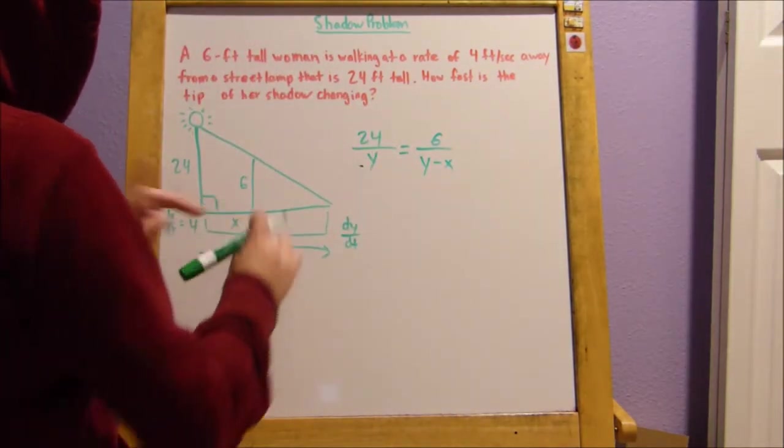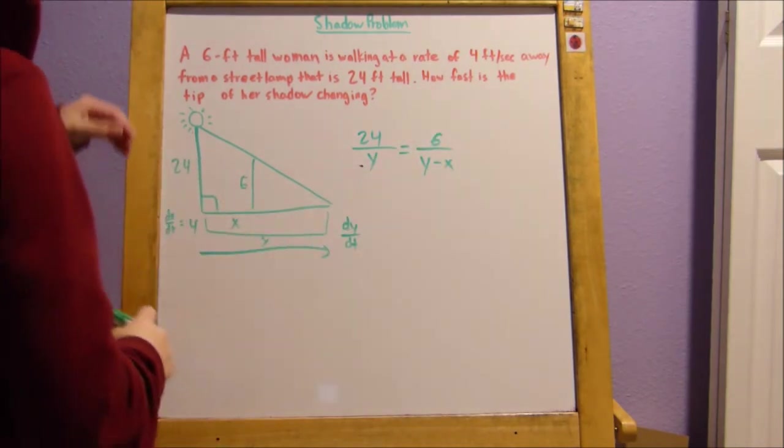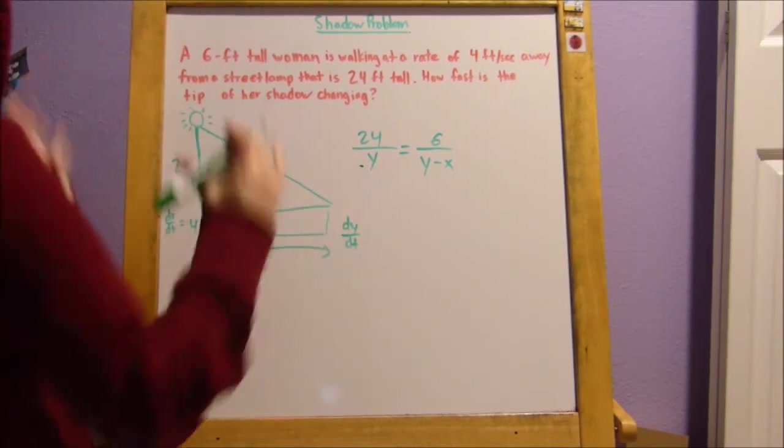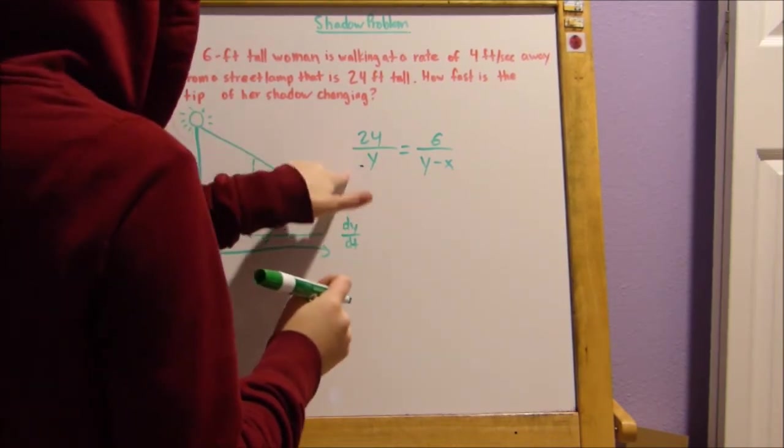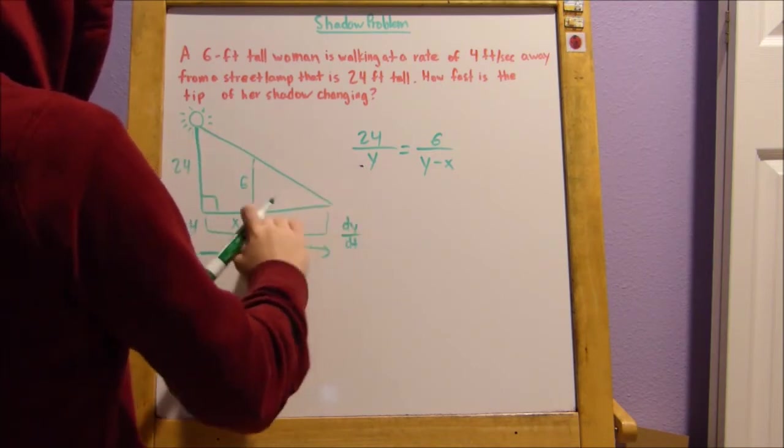Do you see the similar triangles? This is one side length and this is the other side length of the big triangle. This is one side length of the small triangle and this is the side length of the other triangle. It's like a ratio of the sides.